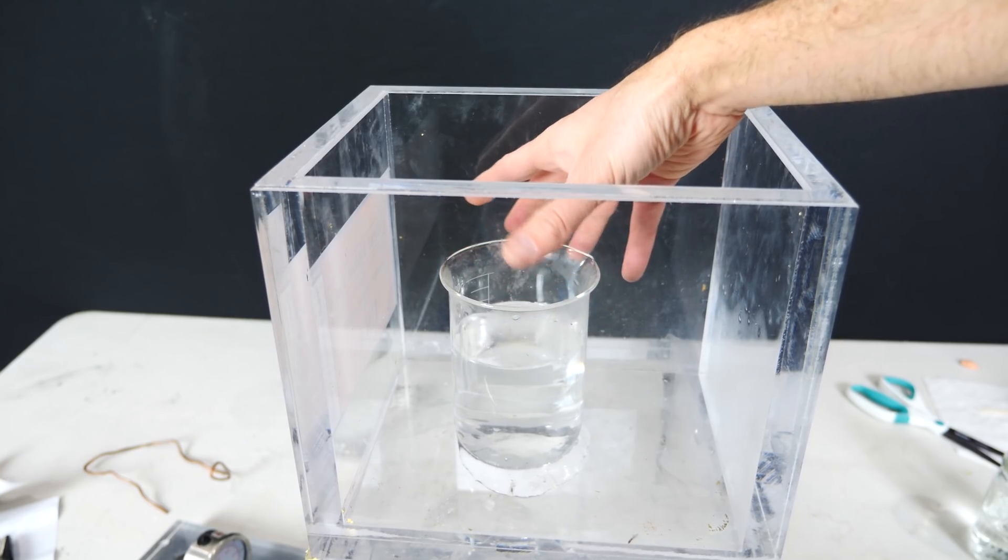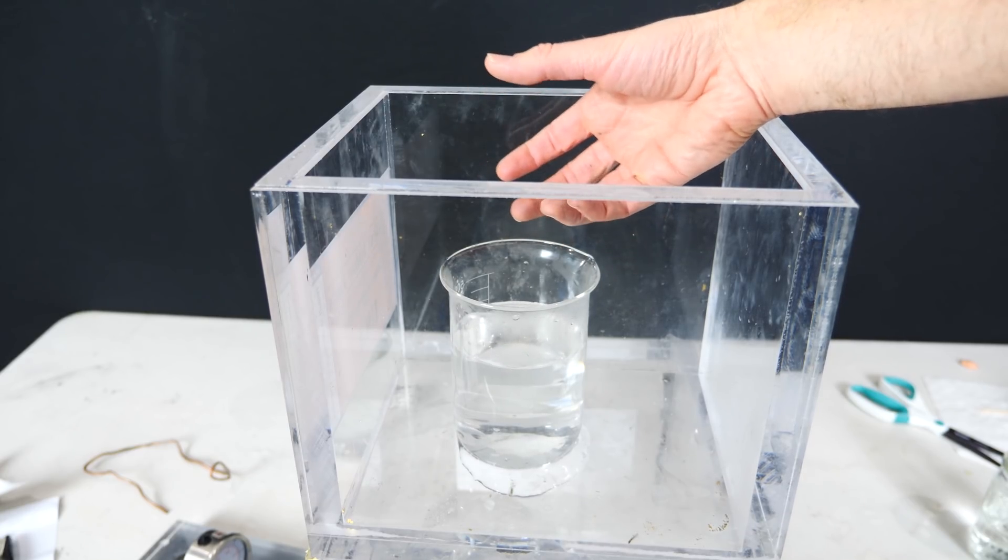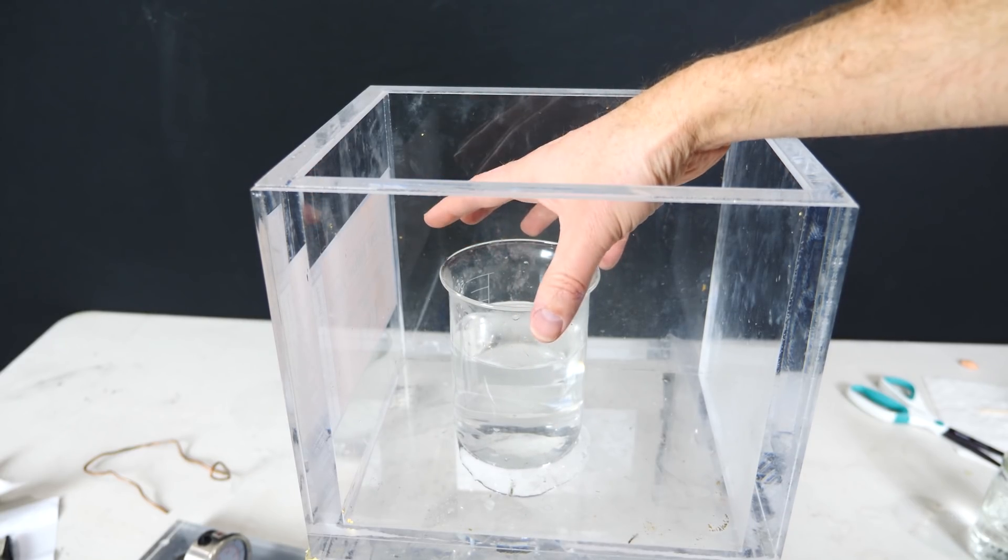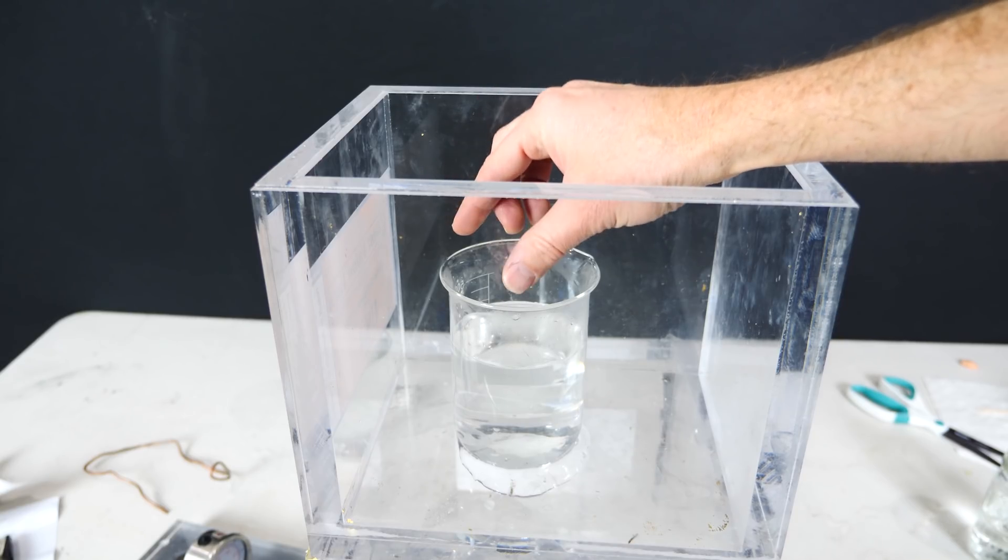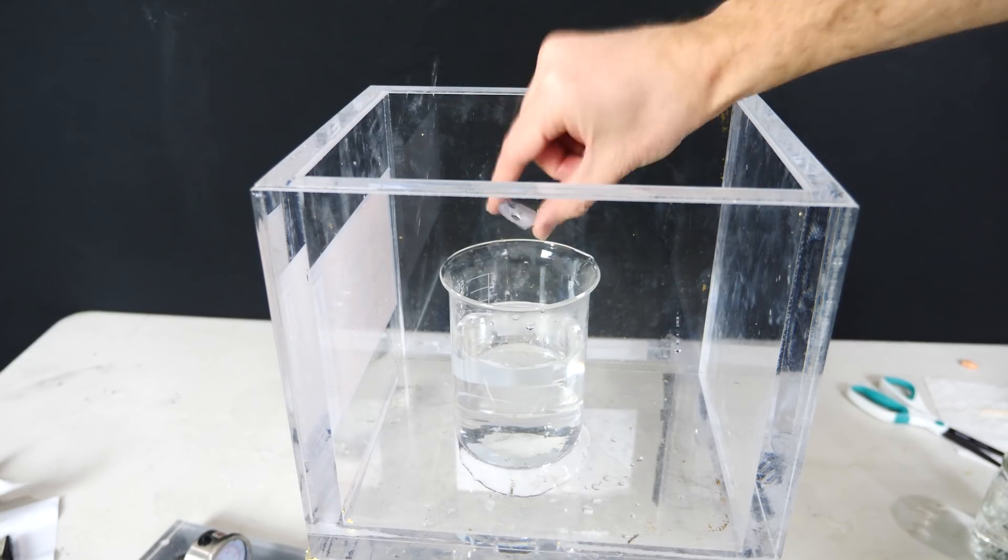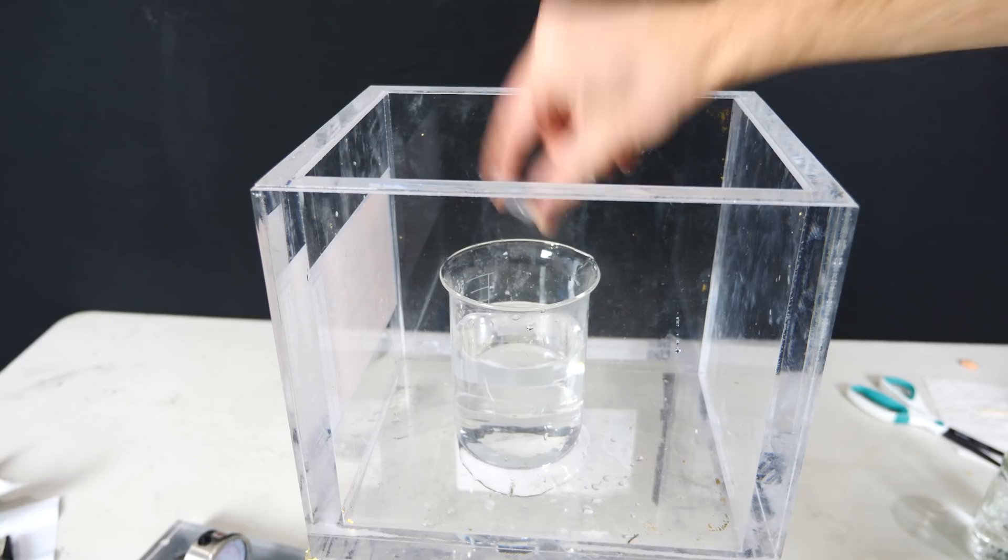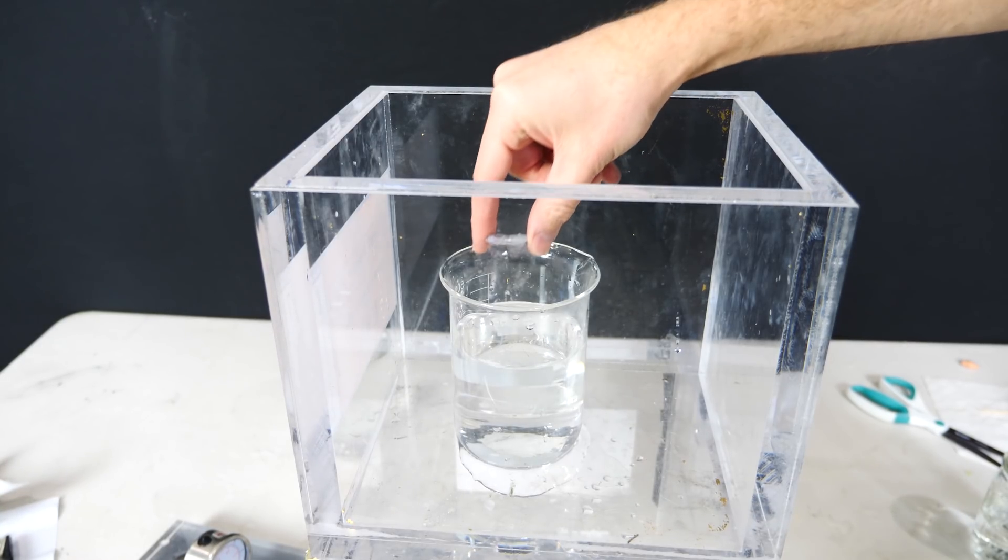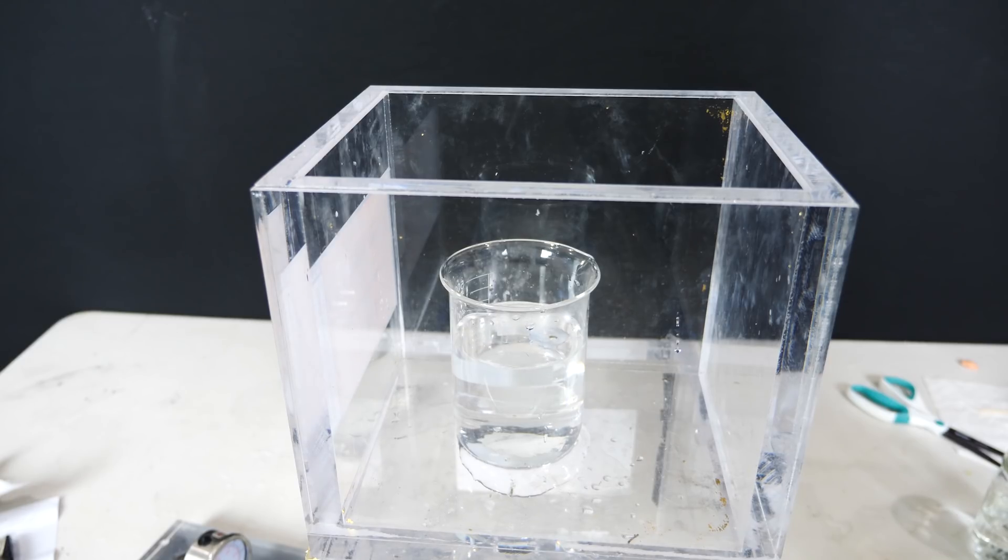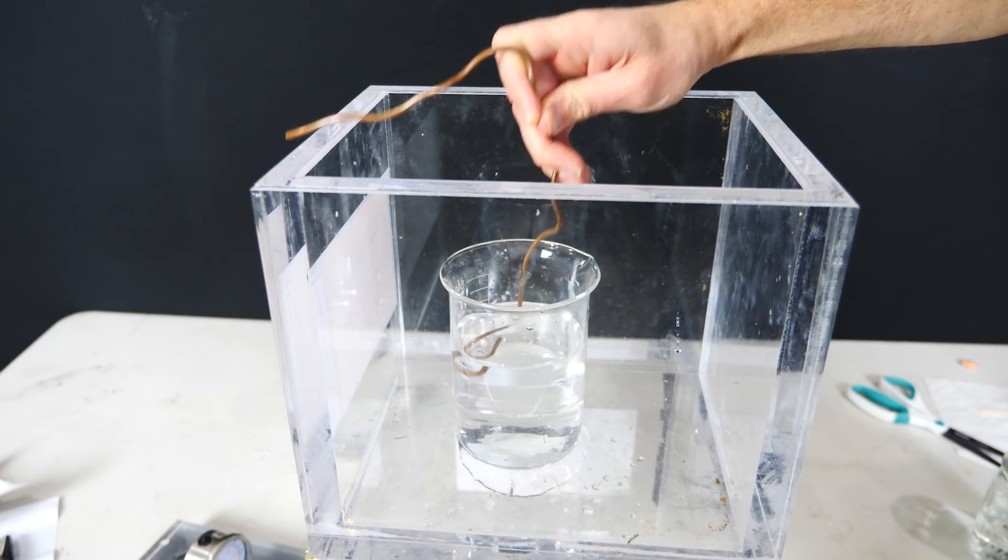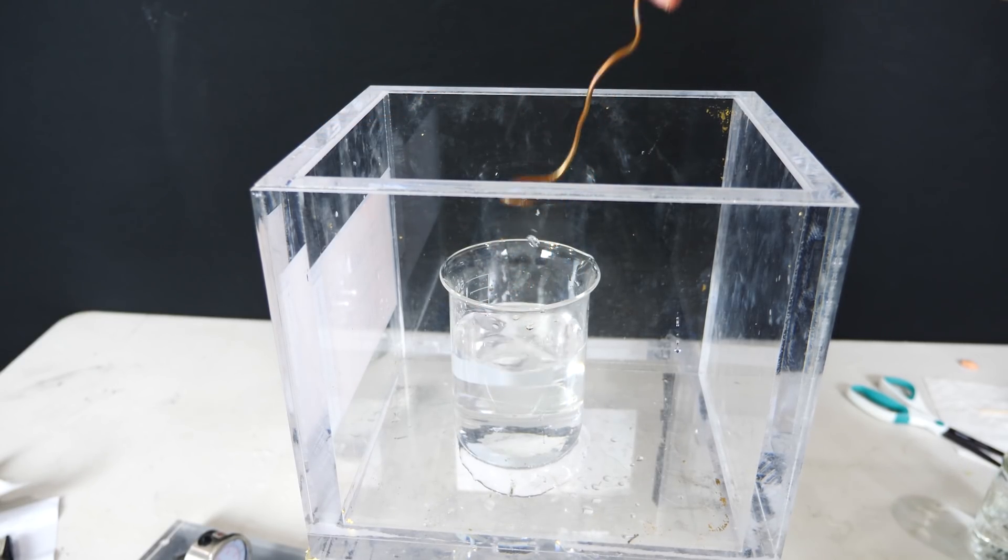So again, the reason it sunk is because the vacuum chamber was one of the only mechanisms in which we could remove that air that was trapped on the hydrophobic surface. But then once I get the water off of it and can expose it to air again, then it'll float and stay that way.